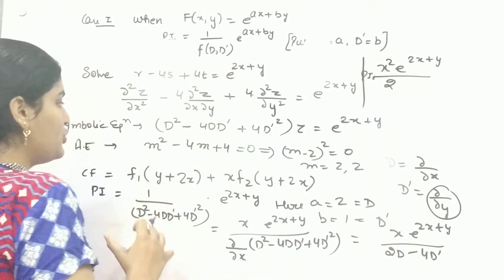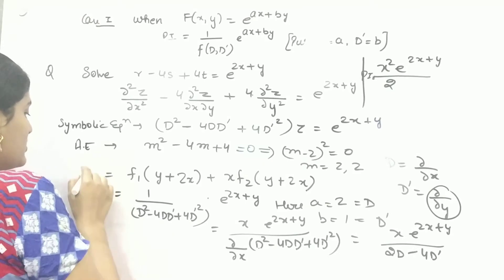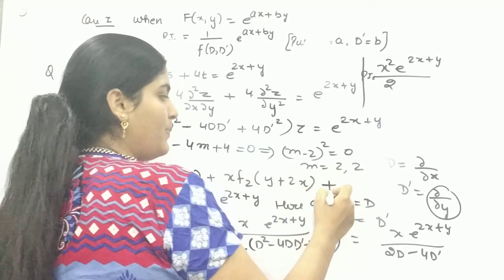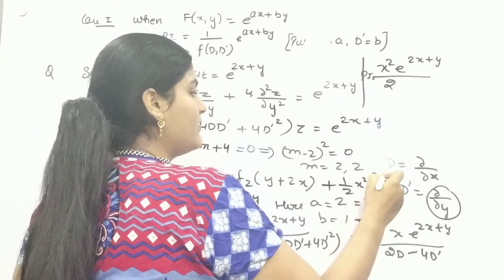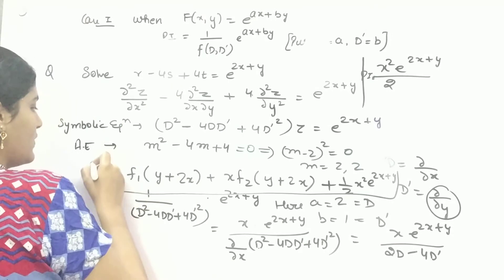So your complete solution will be your complementary factor plus your particular integral which is half X squared E raised to the power 2X plus Y.